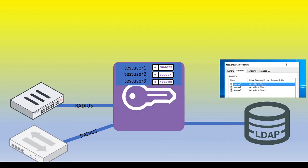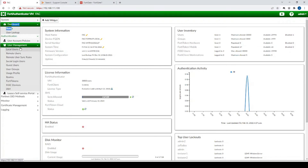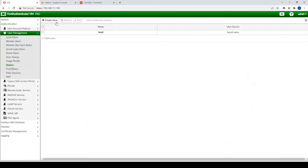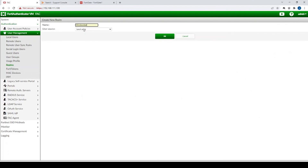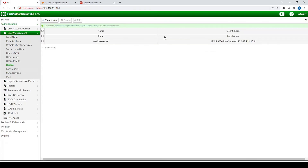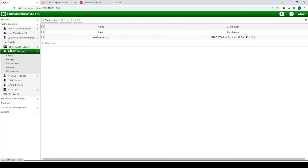Up until now we've focused on the FortiAuthenticator and LDAP server configuration. Now let's focus on the RADIUS client — in our case a FortiGate, though it doesn't have to be a Fortinet product. On the FortiAuthenticator, we'll start by creating a Realm by going to User Management > Realms, naming it 'Windows Server', and setting the user source to the Windows Server LDAP server we just created.